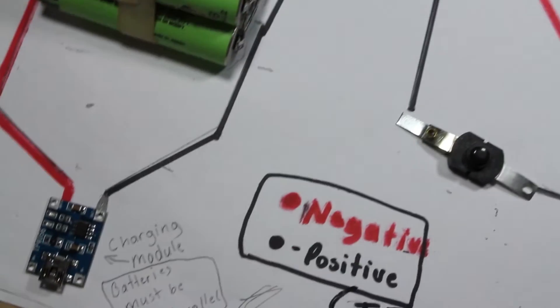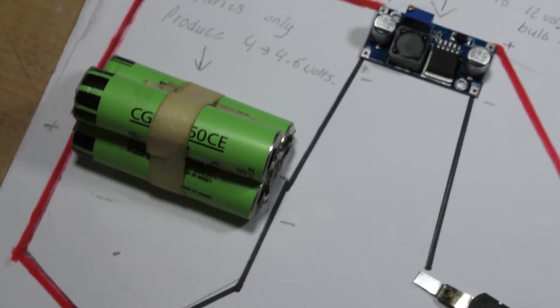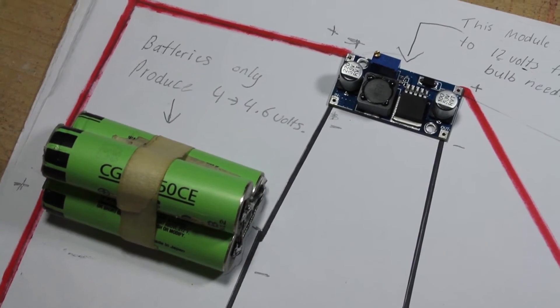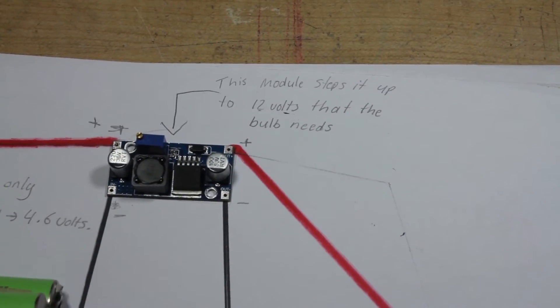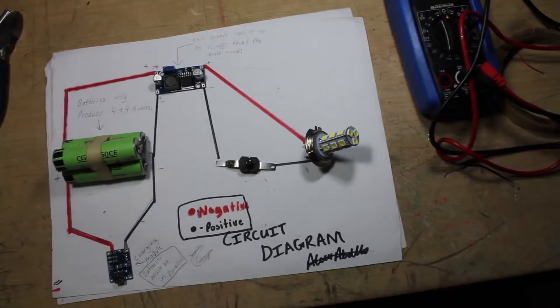Here's a quick look at the circuit diagram. The charging module is connected to the three batteries that are in parallel. Because this only produces 4V, a step-up module is used to boost it to 12V, which is then connected to the switch and the bulb.